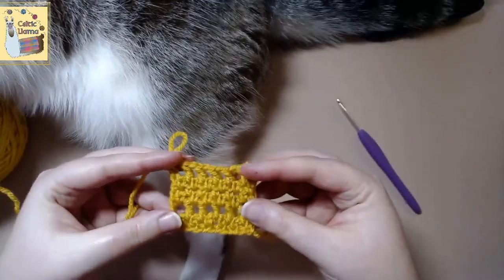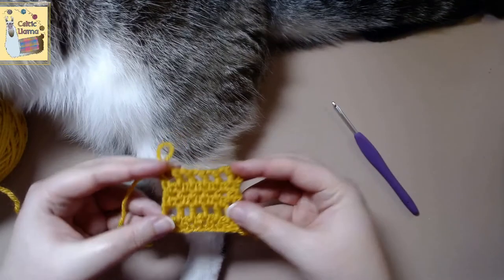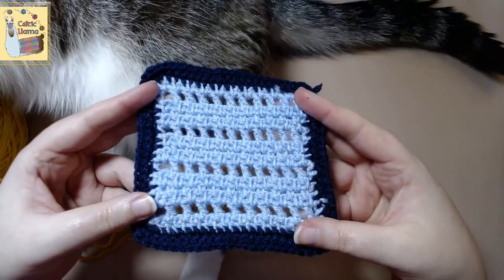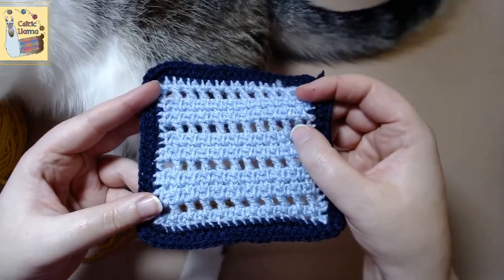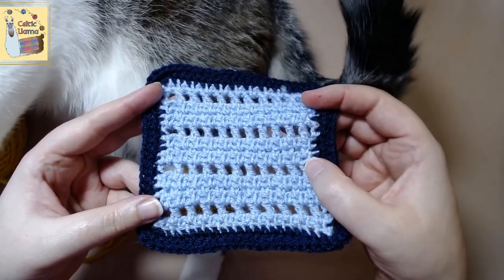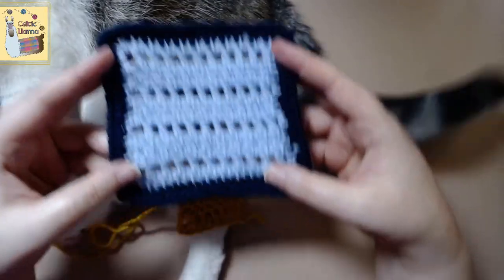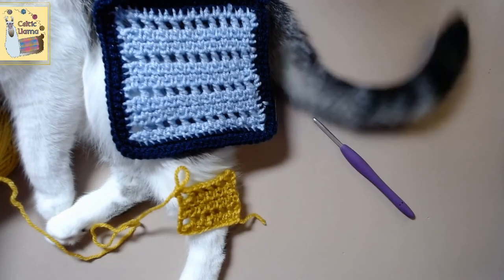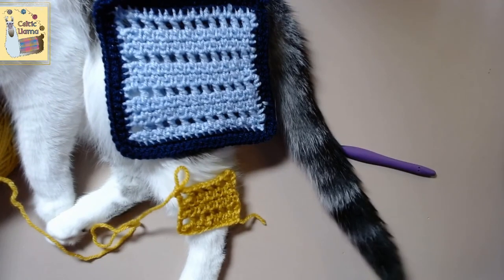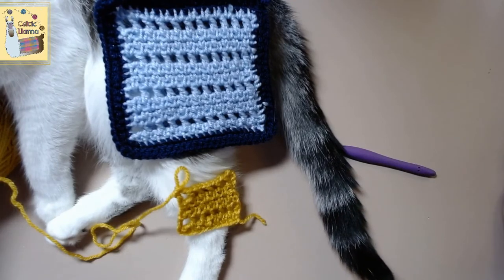And there you have it. That is how you do the eyelet rose crochet pattern. Super easy. And once you build it up, this is how it'll end up looking. So remember, all you need to do is know how to do a single crochet and a double crochet. If you found this video helpful, please give it a like and I hope you have a happy crochet day.